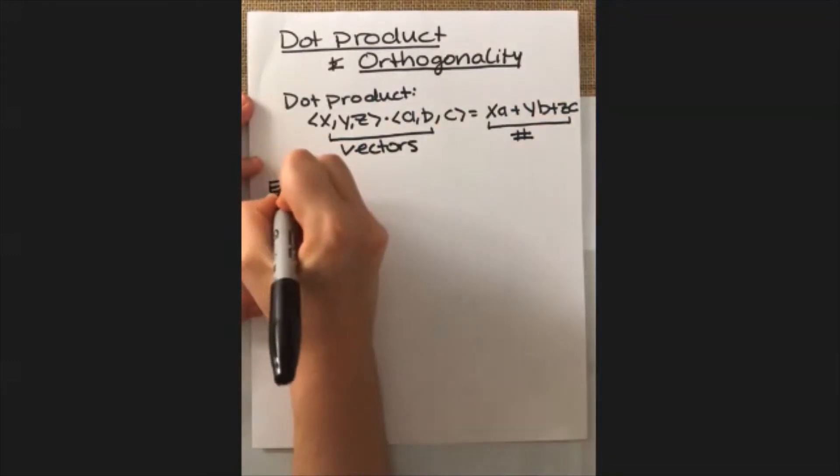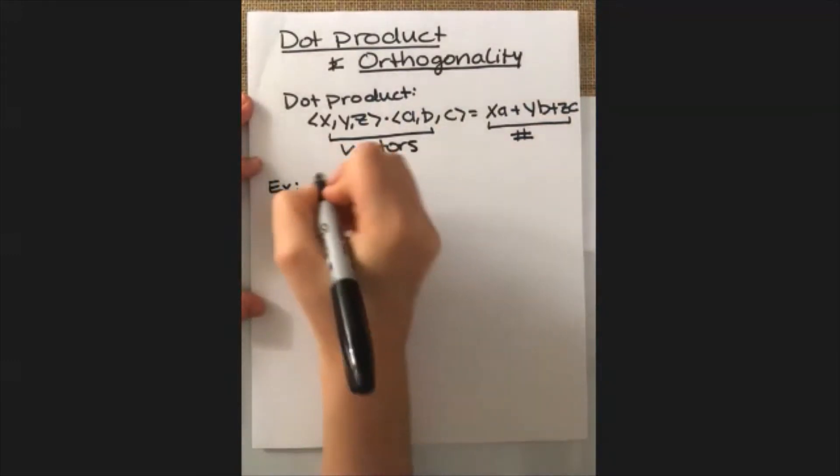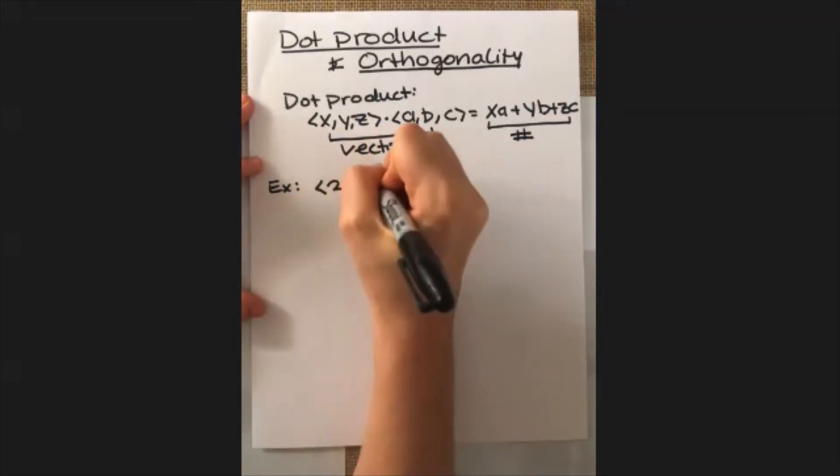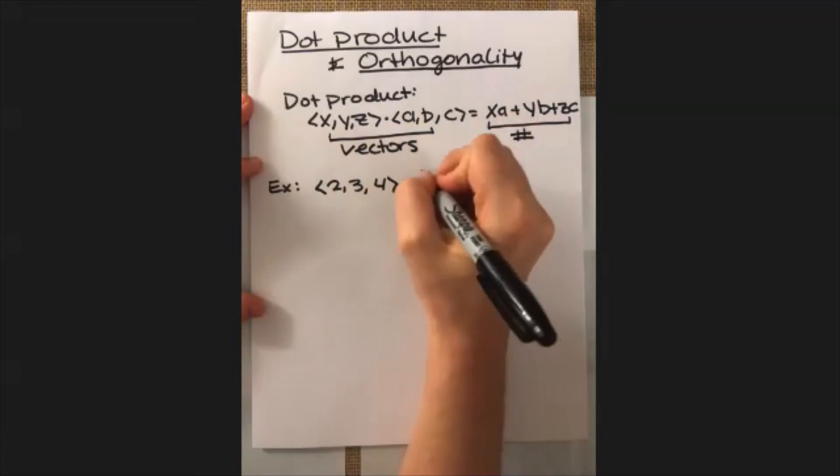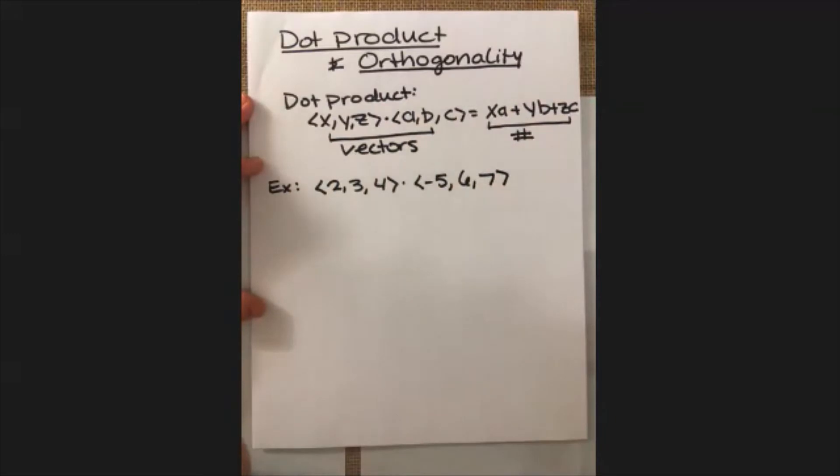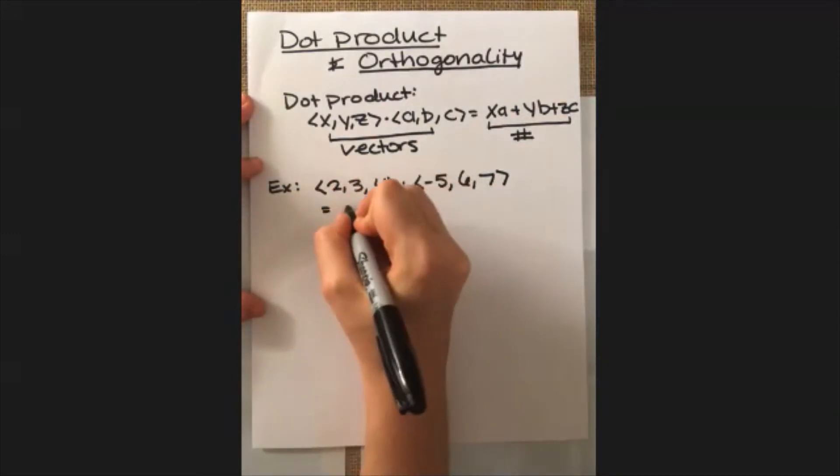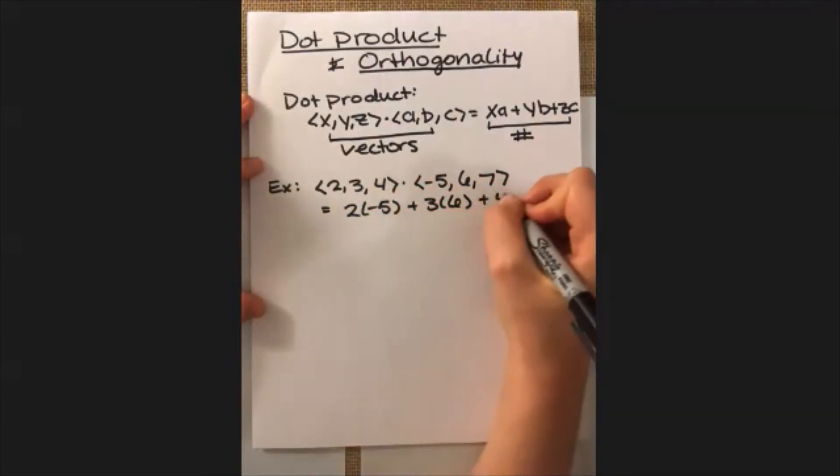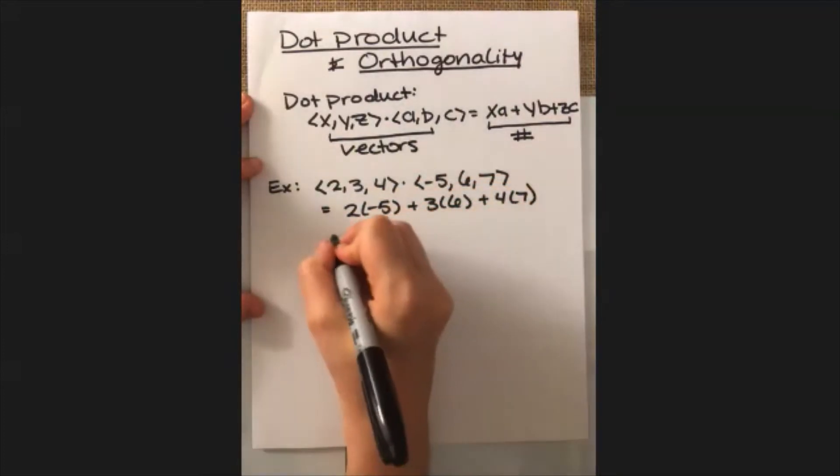So for example, if we have the vectors <2, 3, 4> and we want to dot that with <-5, 6, 7>, then what we're going to get is 2 times -5 plus 3 times 6 plus 4 times 7, which is just equal to 36.